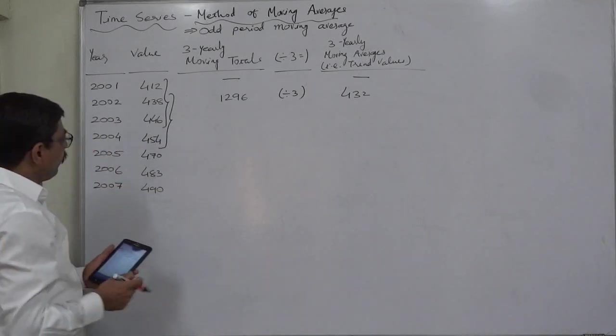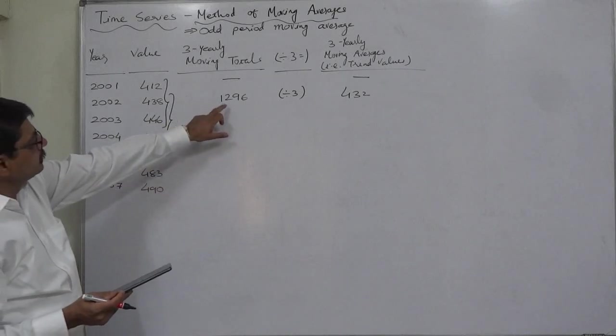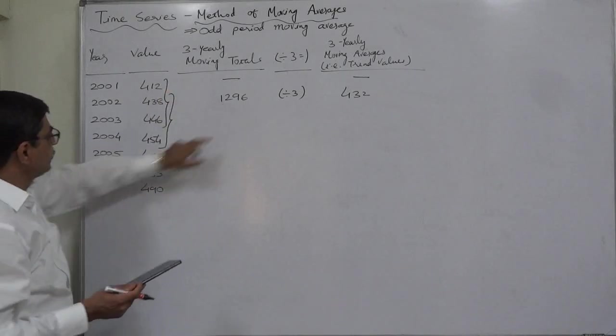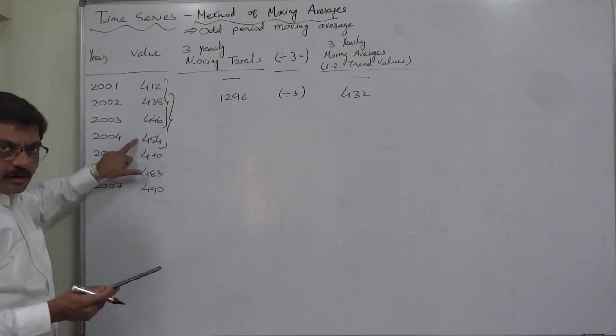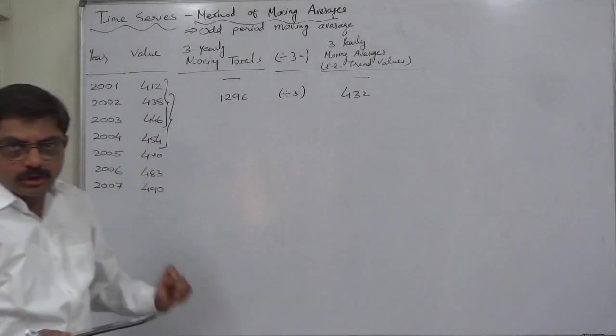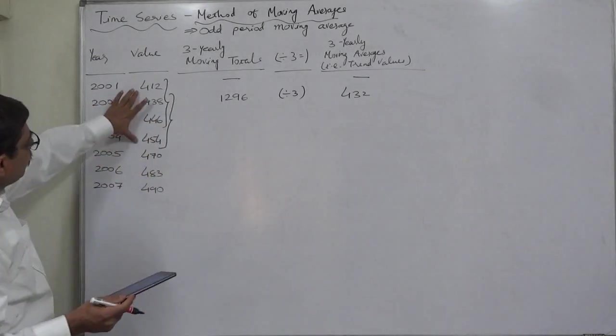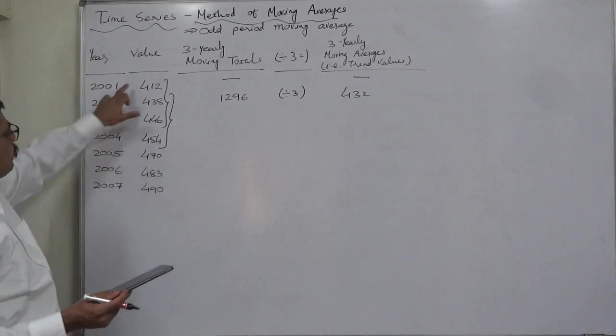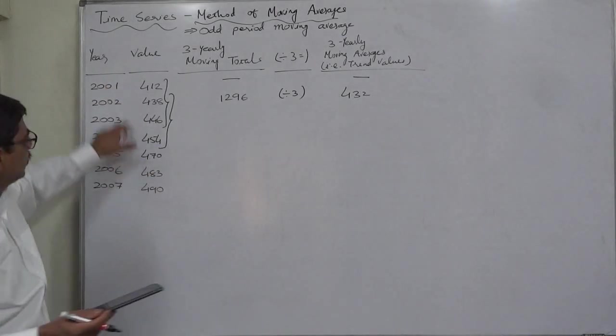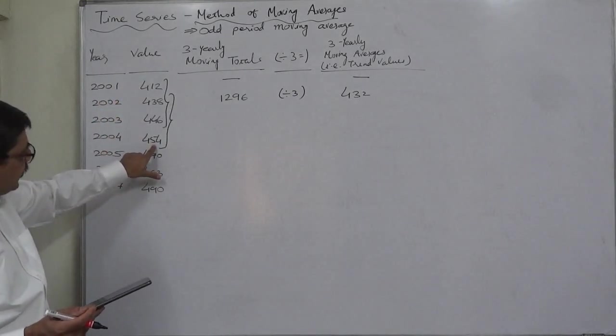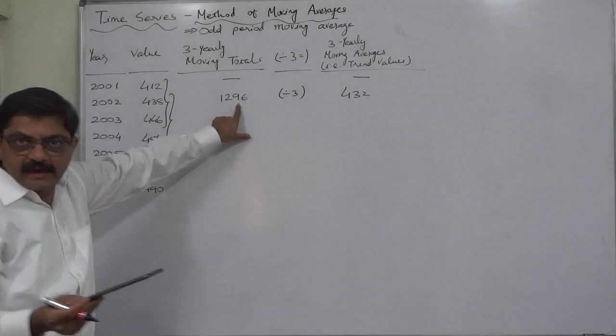For that purpose you can subtract 412 from 1296 and add 454. The students whose mental arithmetic is somewhat good, they can just add or subtract the difference between the value of outgoing year and value of the incoming year. See, the difference is 42 and incoming year is greater, so you just can add 42 to this and you will have the new total.